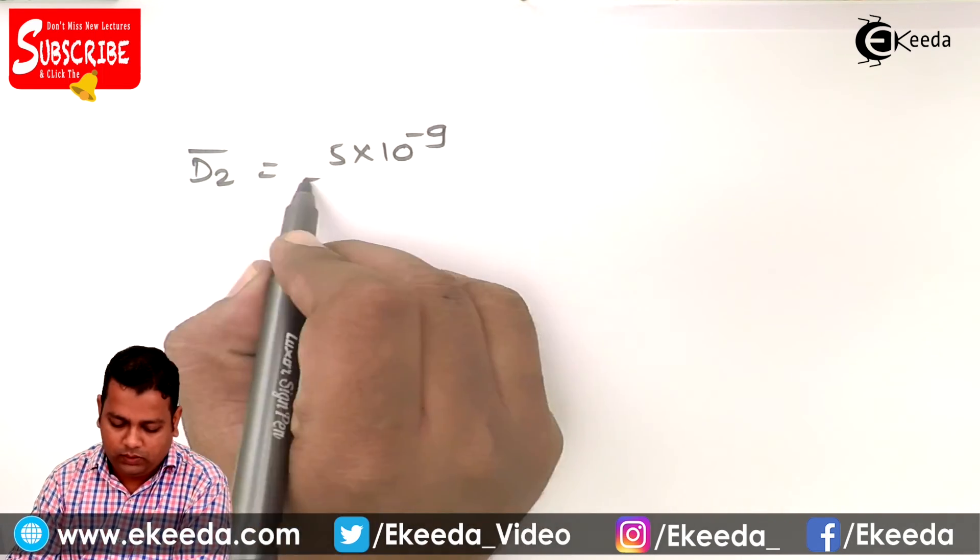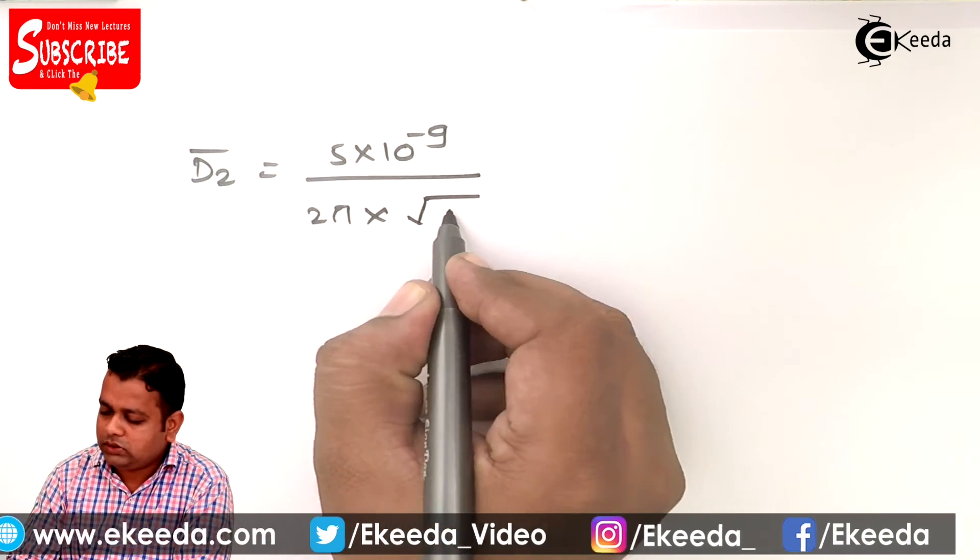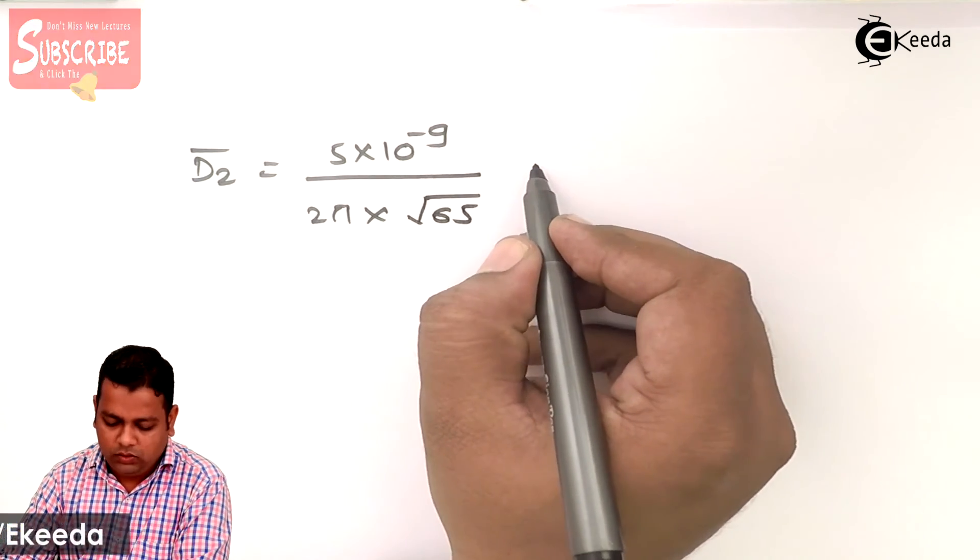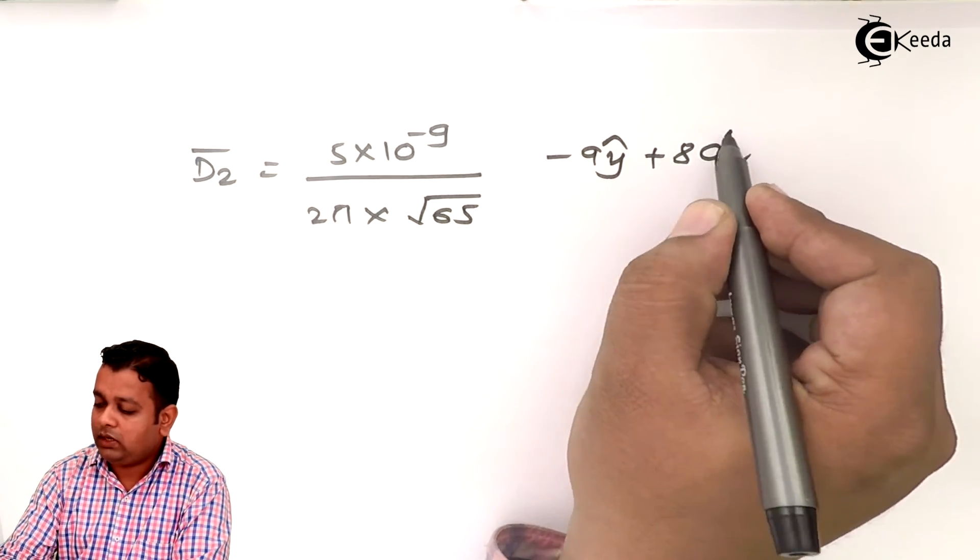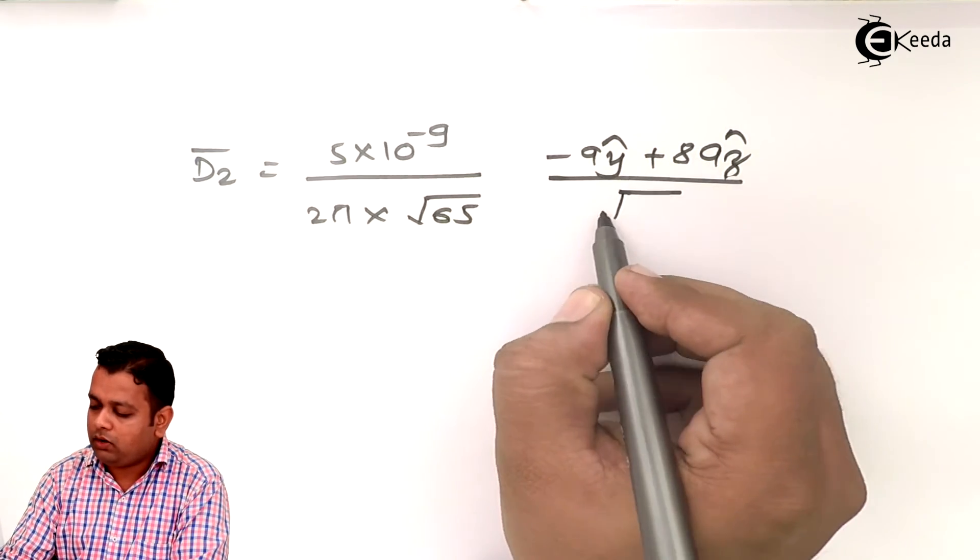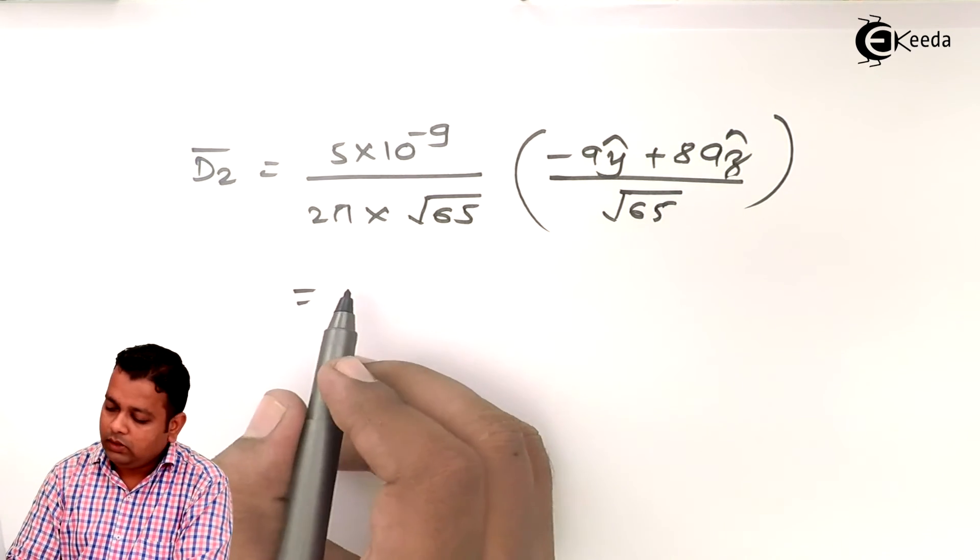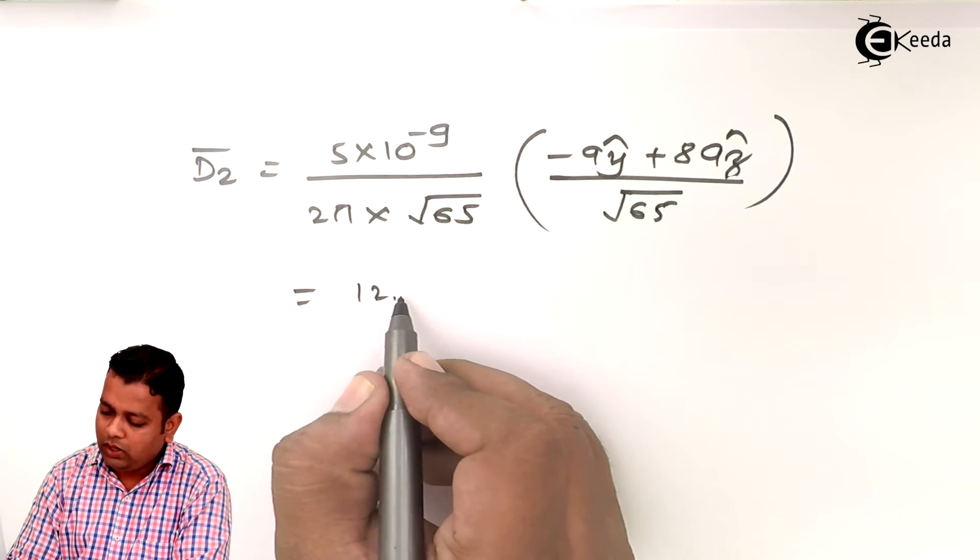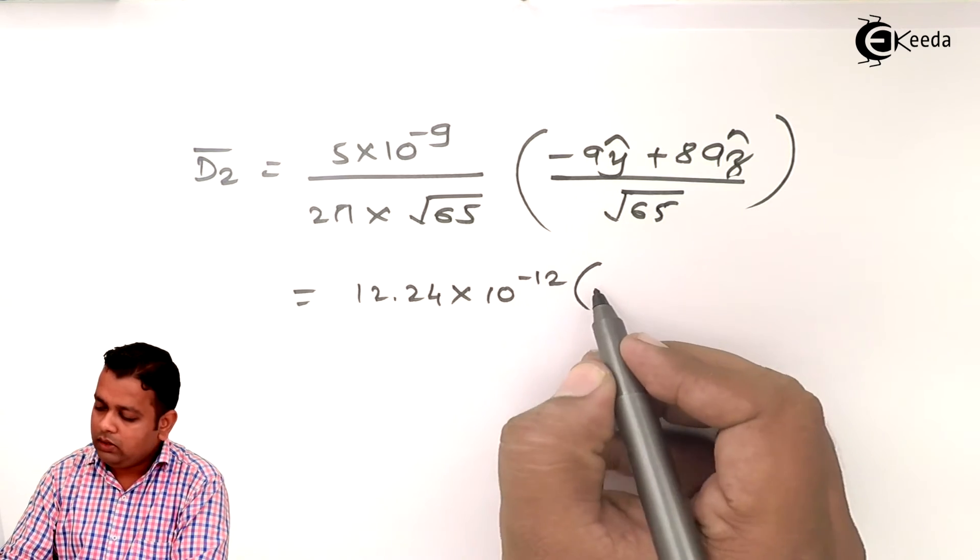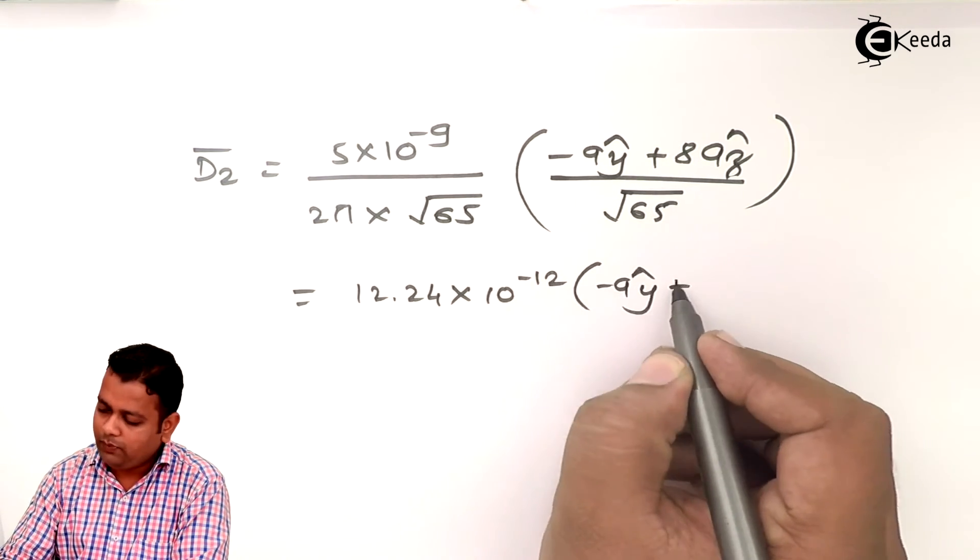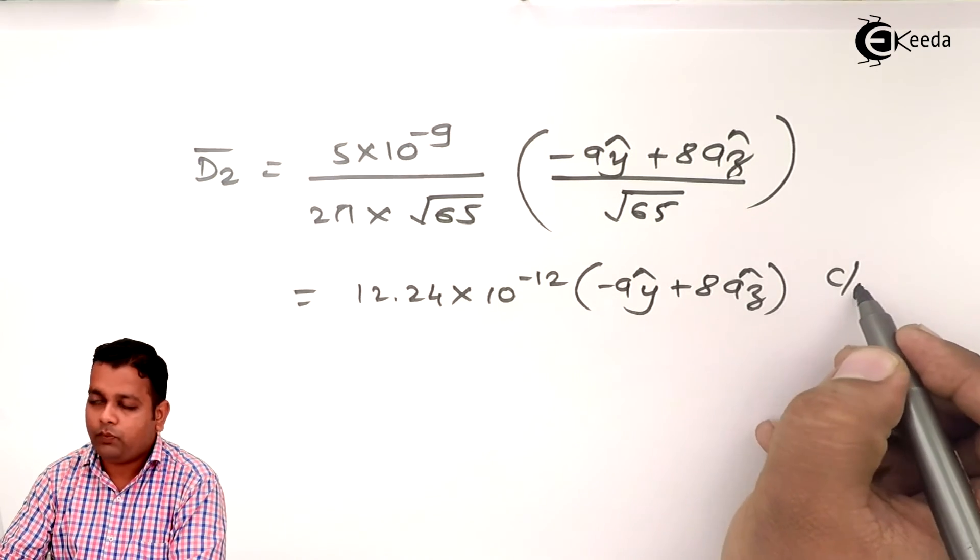Similarly we can write D2 bar. D2 bar will be equal to 5 into 10 to the power minus 9, the magnitude is same, upon 2π into under root 65, minus Ay cap plus 8Az cap divided by under root 65. Hence D2 bar will be equal to 12.24 into 10 to the power minus 12 in bracket minus Ay cap plus 8Az cap, again the unit is coulomb per meter square.